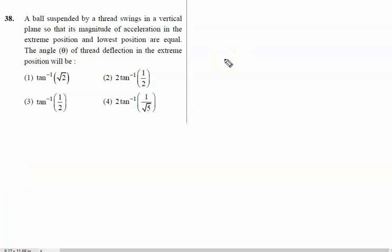A ball suspended by a thread swings in a vertical plane so that its magnitude of acceleration in the extreme position and the lowest position are equal. Vertical plane means you can just think it is SHM.